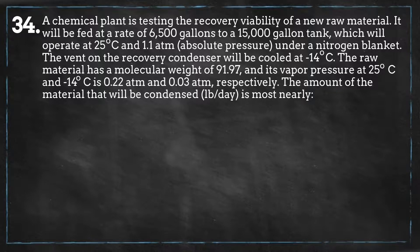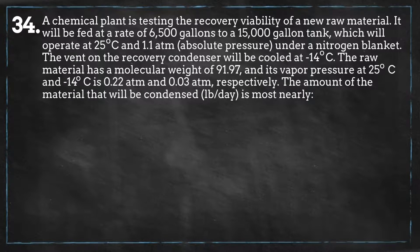A chemical plant is testing the recovery viability of a new raw material. It will be fed at a rate of 6,500 gallons to a 15,000 gallon tank which will operate at 25 degrees Celsius and 1.1 atmospheres absolute pressure under a nitrogen blanket. The vent on the recovery condenser will be cooled at minus 14 degrees Celsius. The raw material has a molecular weight of 91.97, and its vapor pressure at 25 degrees Celsius and minus 14 degrees Celsius is 0.22 atmospheres and 0.03 atmospheres, respectively.